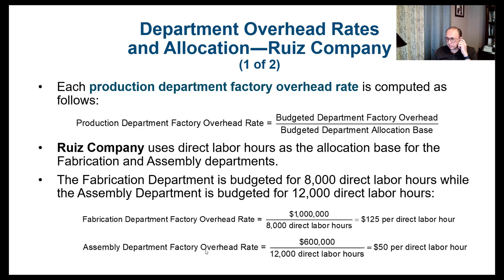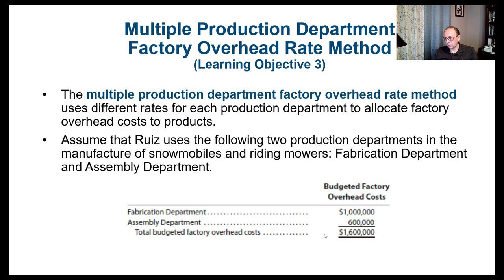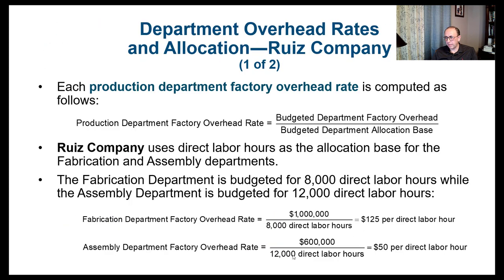For the assembly department factory overhead rate, we take the remaining $600,000 divided by 12,000 direct labor hours, which gives us a rate of $50 per direct labor hour. So the fabrication department rate is $125 per direct labor hour, and the assembly department rate is $50 per direct labor hour.